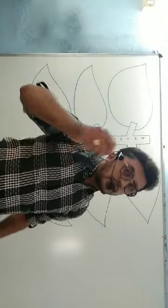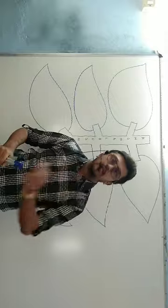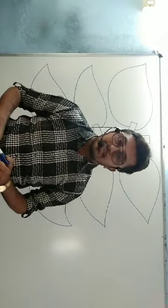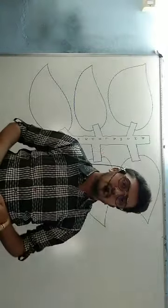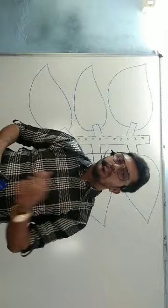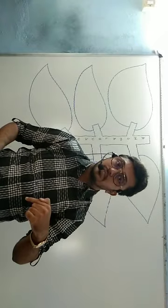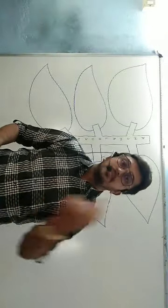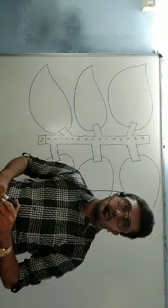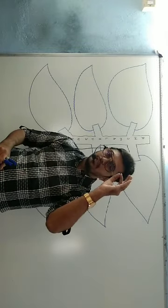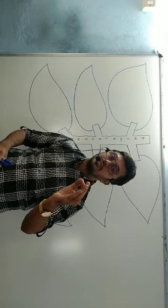Good morning, dear students. In today's lecture we will explain the anomalous behavior of dinitrogen. The first question that arises is: what is anomalous behavior? Anomalous behavior means an element which is different, or which has different types of properties when we compare it with the other elements of the same group. This is known as anomalous behavior.